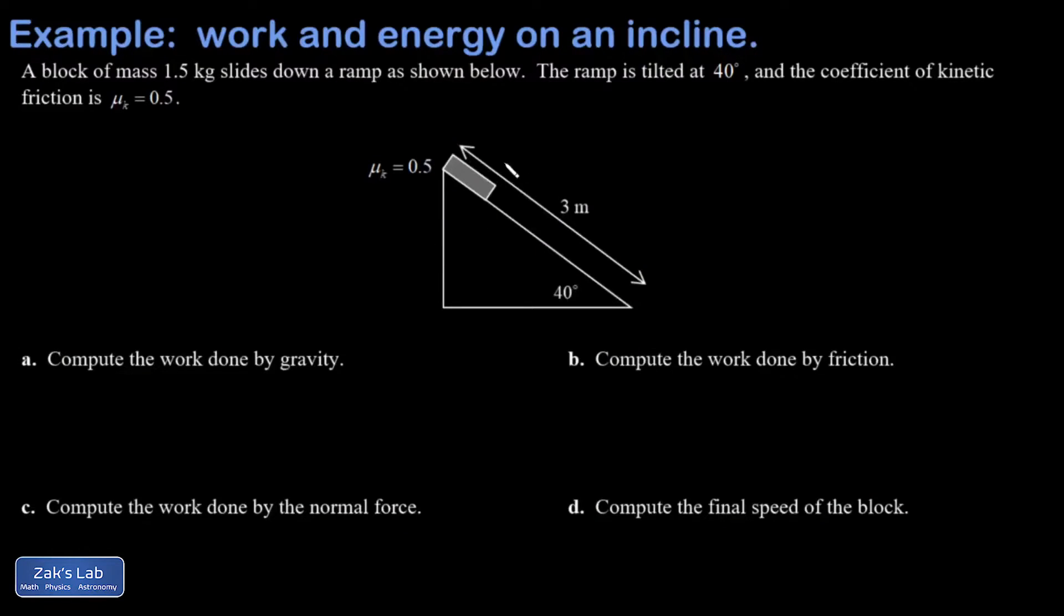All right, on this one we've got a block sliding down a ramp and we're asked about all these work and energy concepts in this context. So I have a mass on this thing of 1.5 and that's not in the diagram, so maybe I'll put it in over here just to remind me. I have a tilt angle, that's there. Coefficient of kinetic friction, that's there, so everything's there for me.